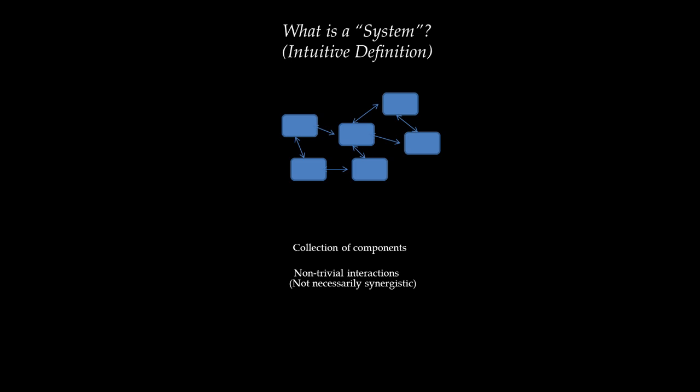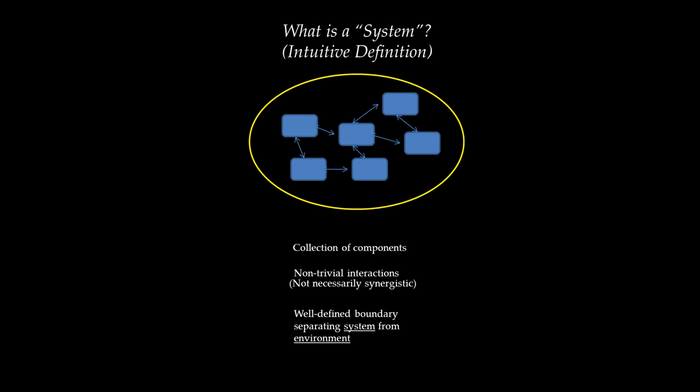The third element of the definition of a system is that its components interact not just with one another but also with everything outside the system — which we call the environment — but this interaction happens in a very well-defined manner. Those familiar with thermodynamics know that a thermodynamic system is drawn with a boundary like a potato or cloud shape, and systems usually have very well-defined boundaries separating them from the environment.